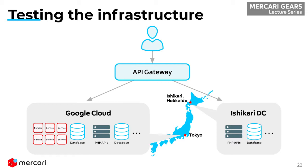The API gateway needs to be able to detect if it's a testing request, and it will also need to be able to propagate that information to all of the services, so that when all of the services decide where to talk to in the next step, they will know to talk to the right data center correctly.